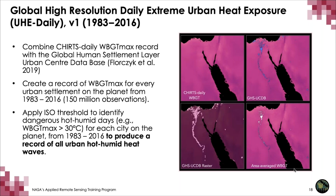We can then apply the ISO threshold to identify how many days for each city on the planet exceeded a dangerous heat threshold — for example, wet bulb globe temperature of 30. The graphic on screen shows our methods loosely: we take a CHIRTS Daily wet bulb globe temperature maximum record, overlay the Global Human Settlement Layer Urban Center Database, turn that into a raster, calculate the area-average wet bulb globe temperature for every day, and identify which days exceeded a dangerous extreme heat threshold.